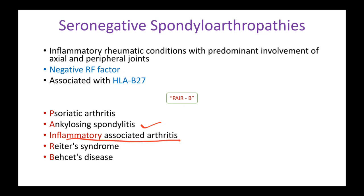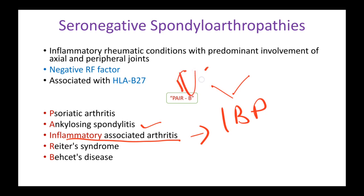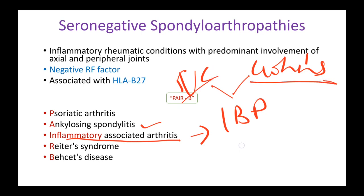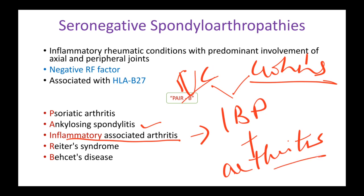Inflammatory associated arthritis is related to inflammatory bowel diseases. The two inflammatory bowel diseases we know are ulcerative colitis and Crohn's. When these digestive conditions also present with arthritis or joint conditions, that is called inflammatory associated arthritis.